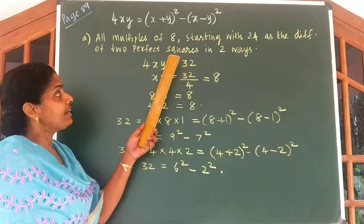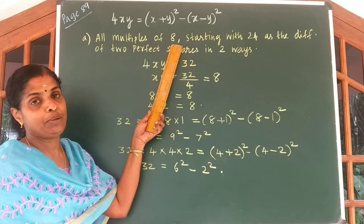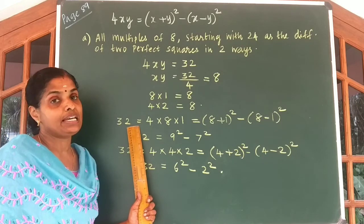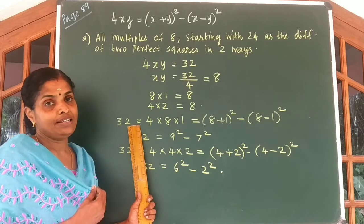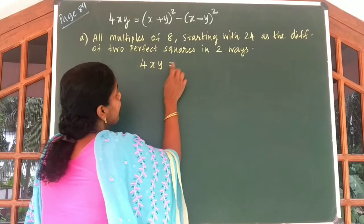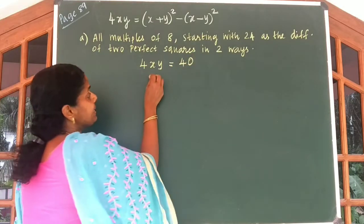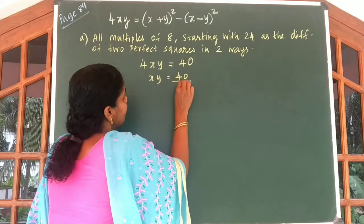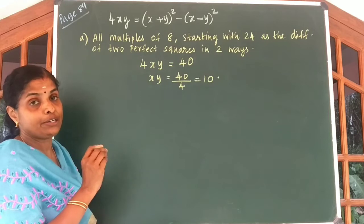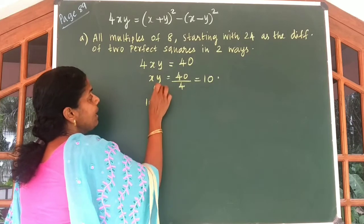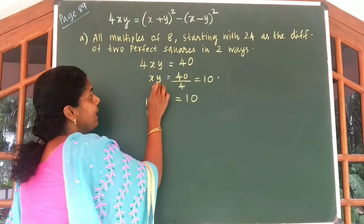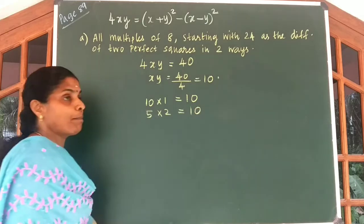In a similar way, we can write all multiples of 8. The next multiple is 5 eights are 40. So let us write 40 also in two different ways. We write 4xy is equal to 40. From this, xy is equal to 40 by 4, which gives you 10. Product of x and y is going to be 10. We can take x is equal to 10 and y is equal to 1, or x is equal to 5 and y is equal to 2.